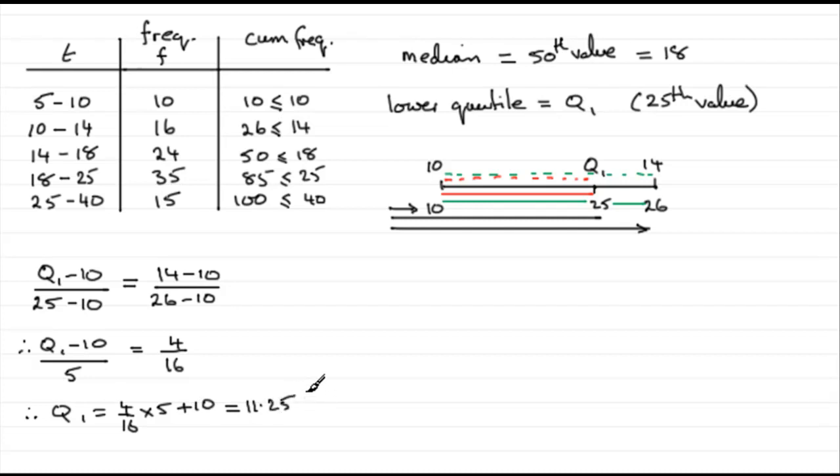Now I'll do a similar method now for working out the upper quartile. So we'll do a similar diagram to that. Let's just rule this one off here. What would my diagram look like? Well, first of all, where is the upper quartile going to be? Let's just put it in, upper quartile. It's going to be given by Q3. Remember, the median is often called Q2, so upper quartile Q3. And because we've got 100 values, it's going to be 3 quarters the way along. That's the 75th value.